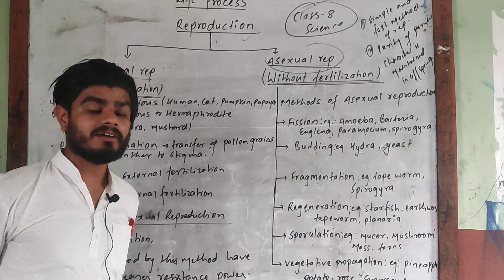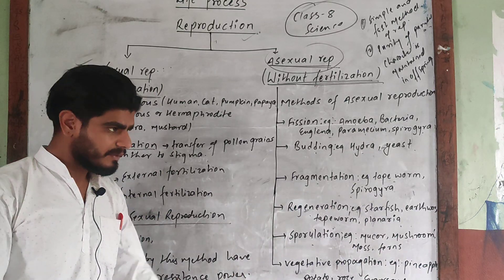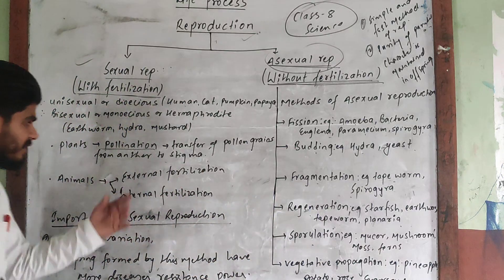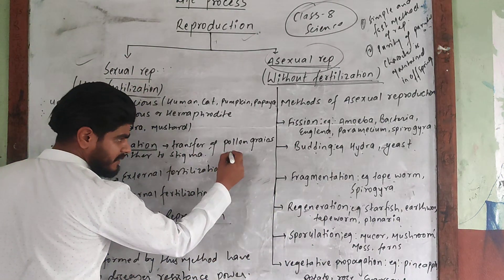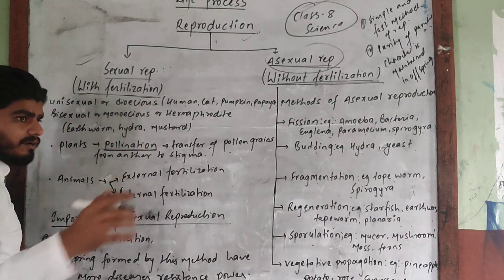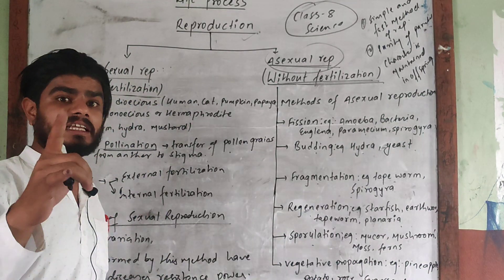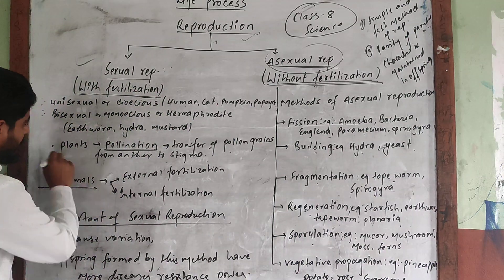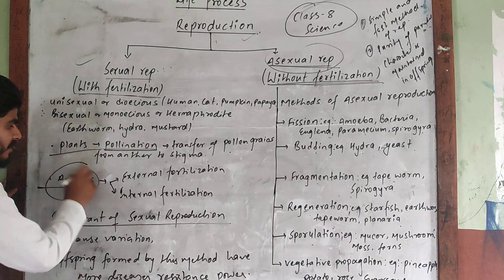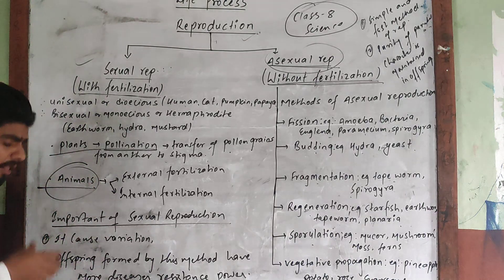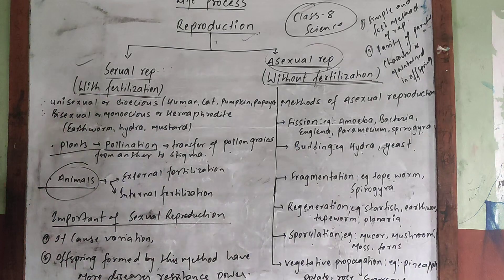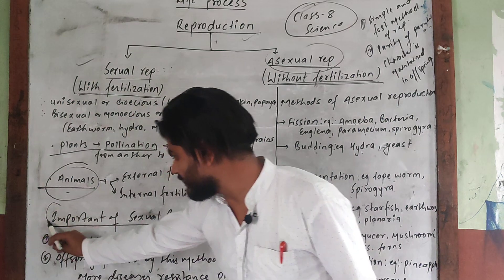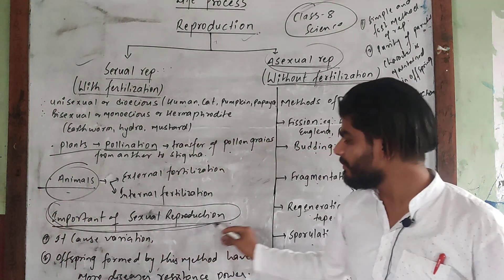Cross pollination means transfer of pollen from a different flower or the same flower. The difference between cross pollination and self pollination. In animals, it can be external or internal fertilization.